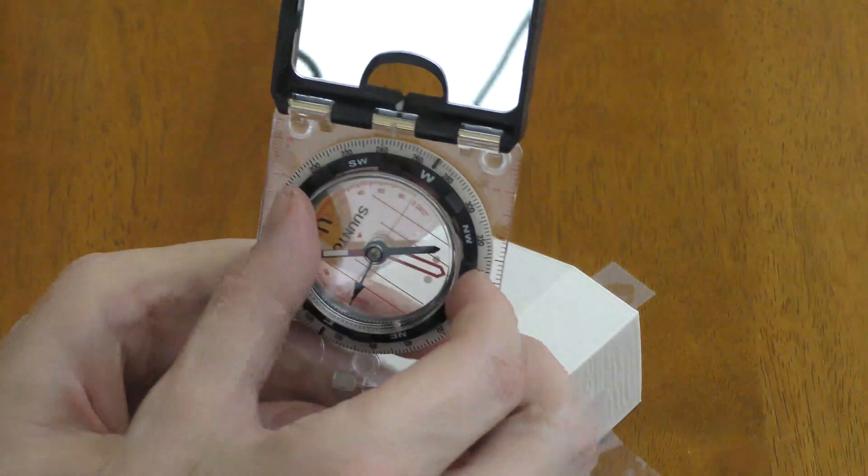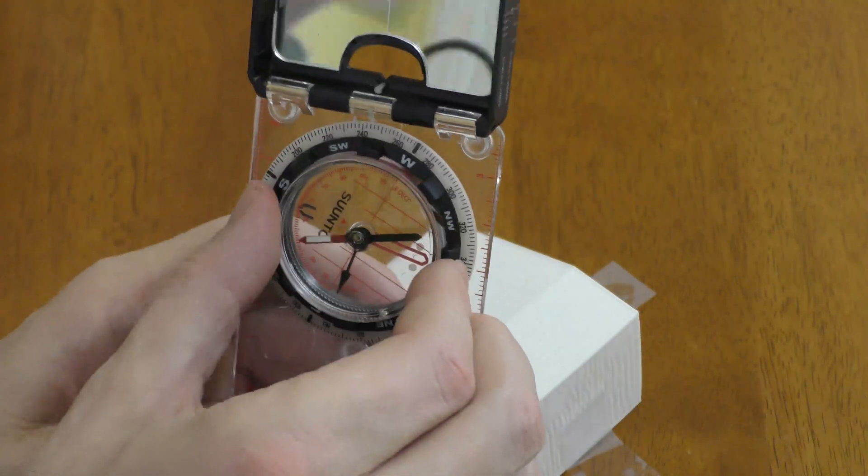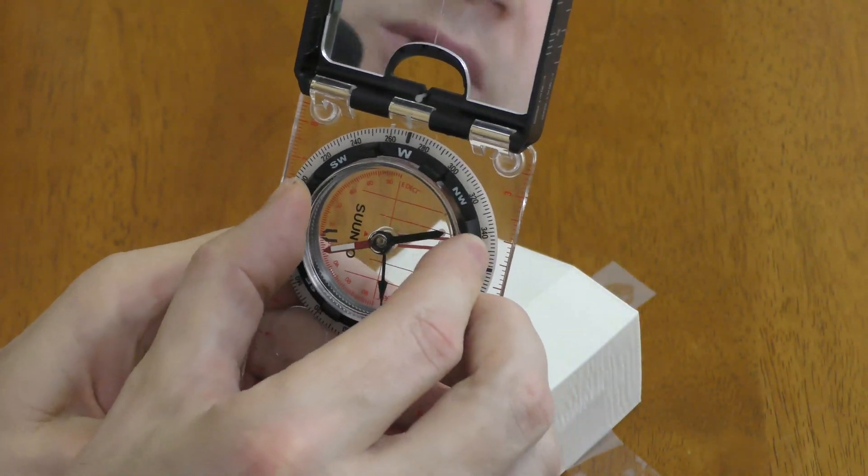Now, the next step is to look at the dip. And to do this, we rotate this particular compass east-west.